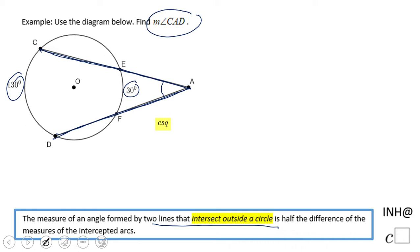This is half the difference of the intercepted arcs, which are 130 and 30 degrees. So the measure of angle CAD is half of the difference of the measure of arc CD, which is the larger one so you start with that one, minus the arc CF.